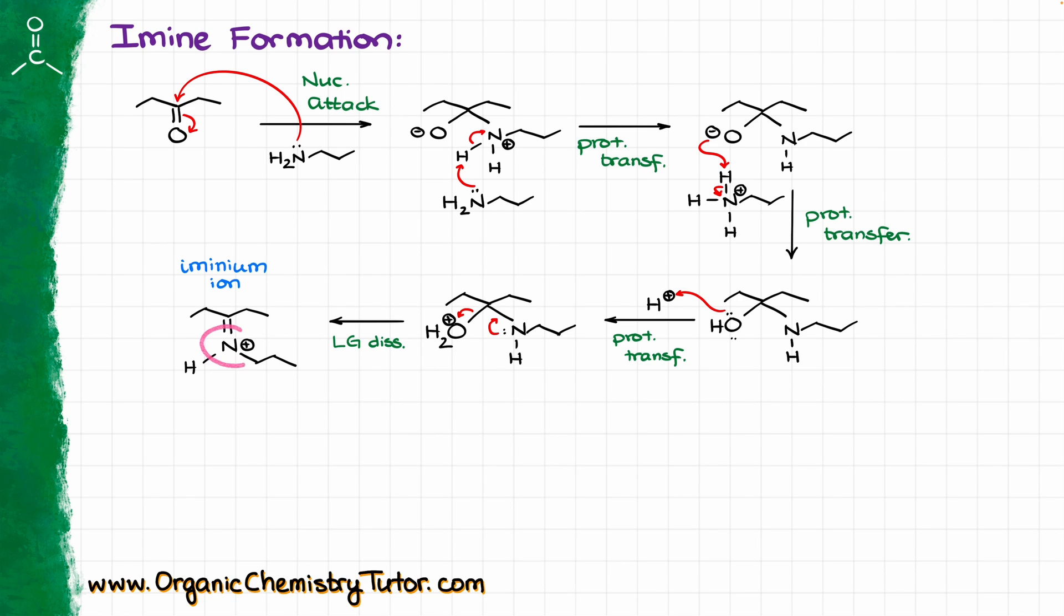Now, this iminium ion is not particularly stable because we have an extra charge on our nitrogen, so we'll have to get rid of this proton somehow. And in order to do that, we are going to use another molecule of my amine, or whatever else that you have floating around, pull that proton off, and we are going to get our imine, which is our final product, and I will remind you here one more time that imine is the molecule with the C-N double bond.